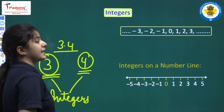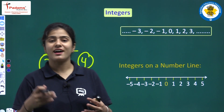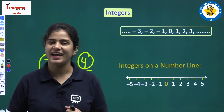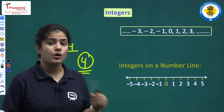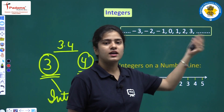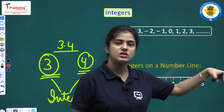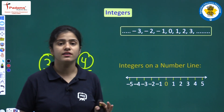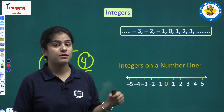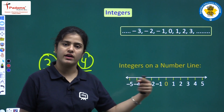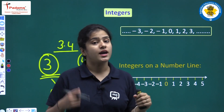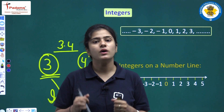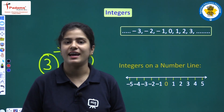Integers are the numbers that are negative, positive and zero. If I am talking about the right side, there are an infinite number of positive numbers. Positive integers are infinite, and negative integers are also infinite. So integers are infinite.